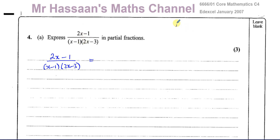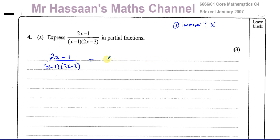That's always the first thing you check — is it an improper fraction? Because that will change the answer. The highest power in the numerator is x, and the highest power in the denominator is x squared. So this is a proper fraction, and we don't have to worry about any whole parts.